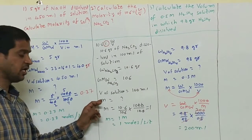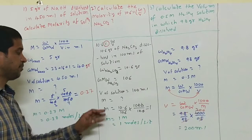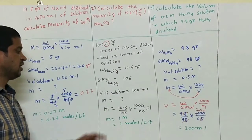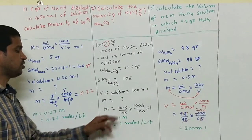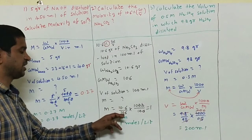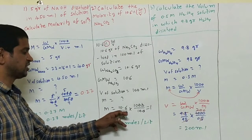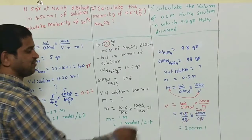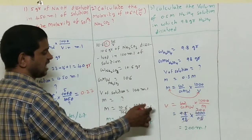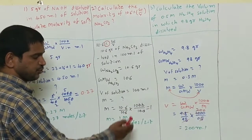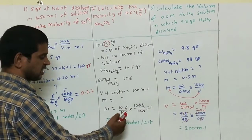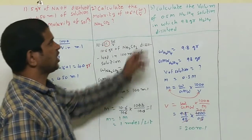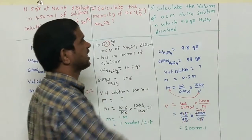We have to calculate M, that is molarity — I put a question mark here. Substituting all values in the formula: M equals 10.6 divided by 106, multiplied by 1000 divided by 100. After simplification we get 1. The units are 1 M, or 1 mole per liter. The third question is: calculate the volume of 0.5 M H₂SO₄ solution.